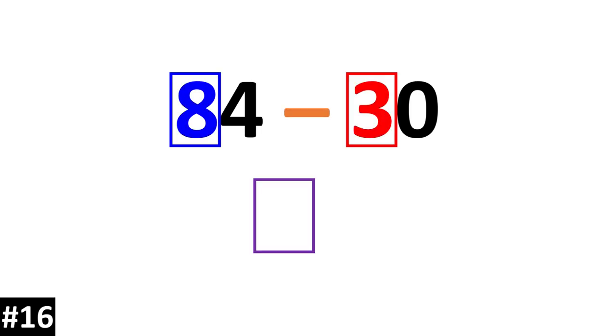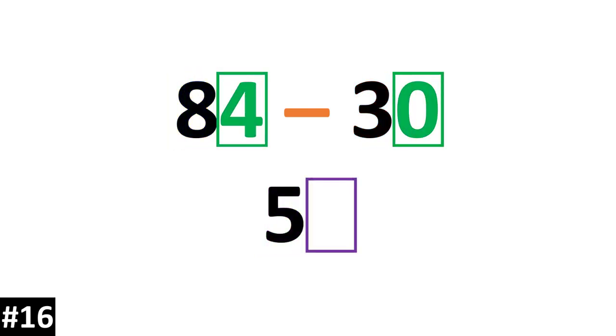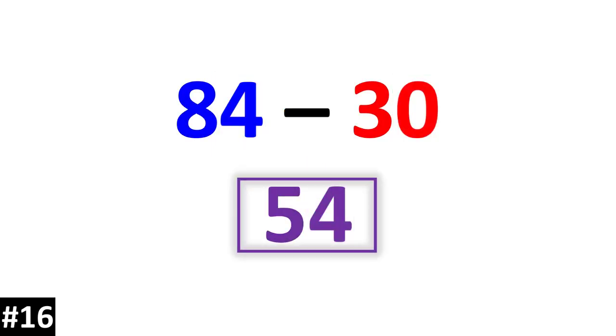84 minus 30. 8 10s minus 3 10s is 5 10s. We look to the ones: 4 minus 0 is 4. So our answer is 54.